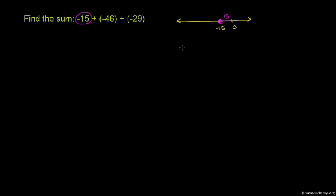Let's do the same thing for negative 46. So once again, let me draw a number line. Zero is going to be right over there, and negative 46 is going to be someplace over here. Same exact idea — the distance between negative 46 and zero, or the absolute value of negative 46, is going to be 46. Its direction is to the left, and that is why we get the number negative 46. The negative tells you whether you're to the left or right of zero, and the absolute value says how far you are from zero.